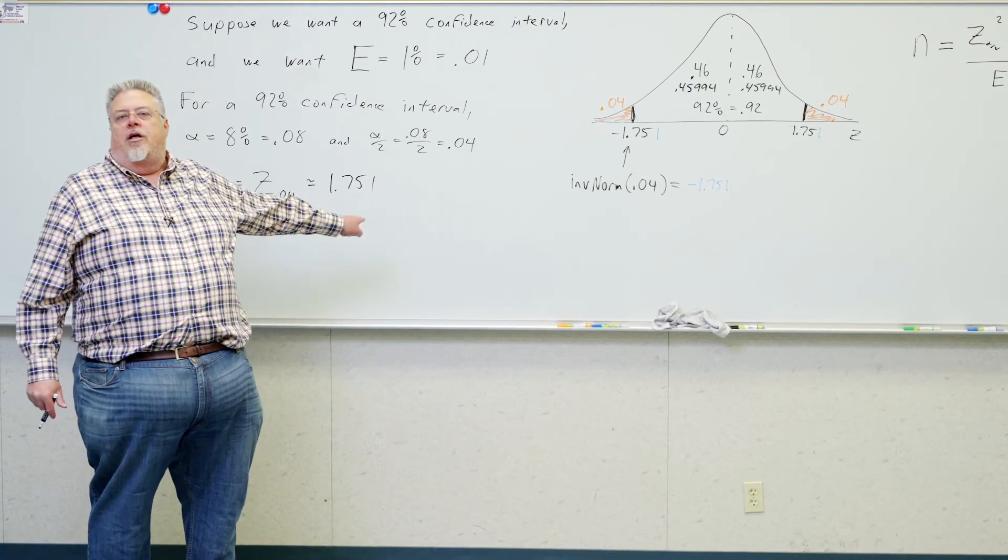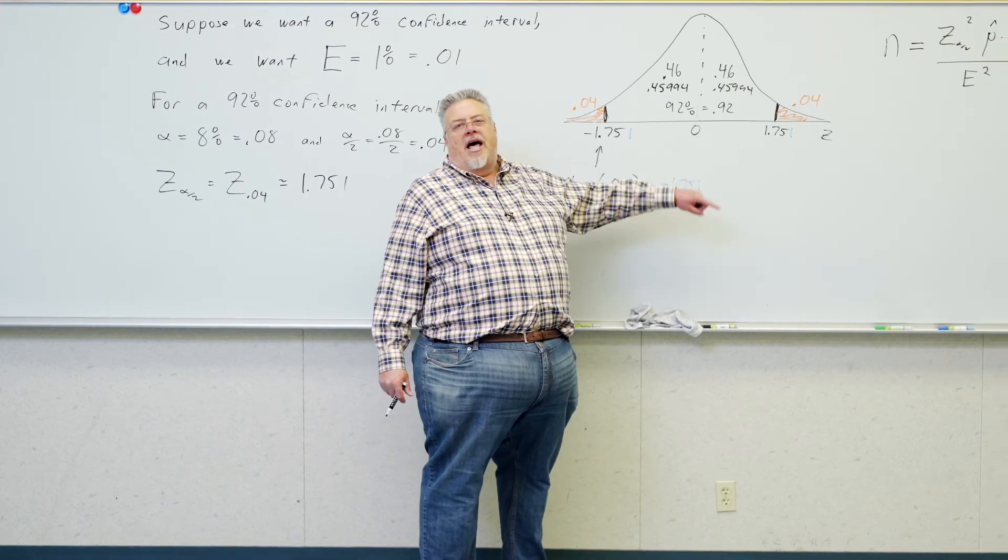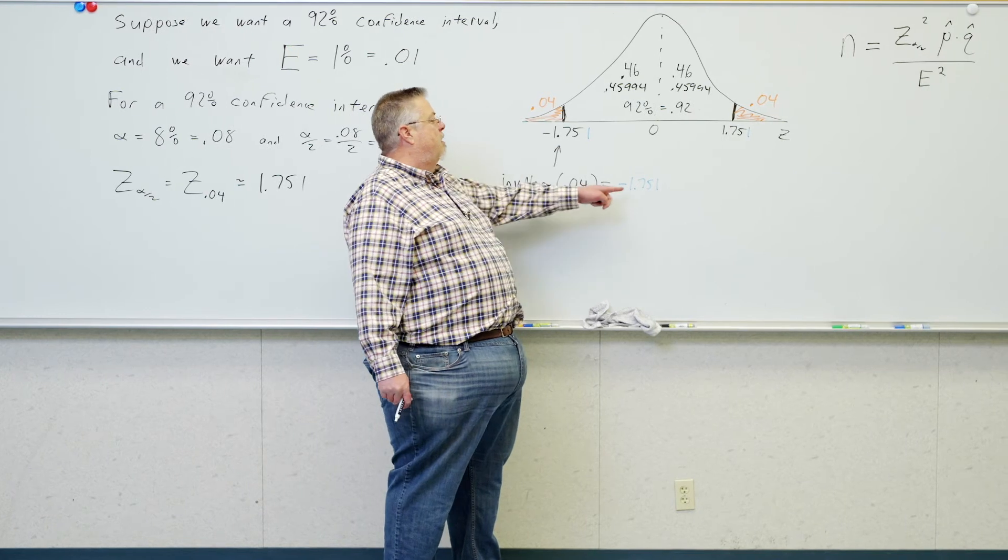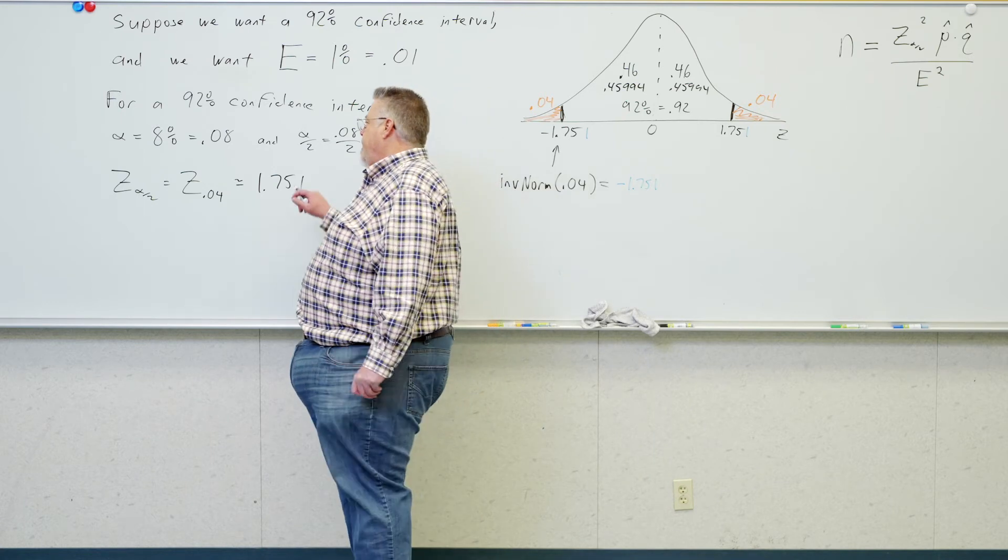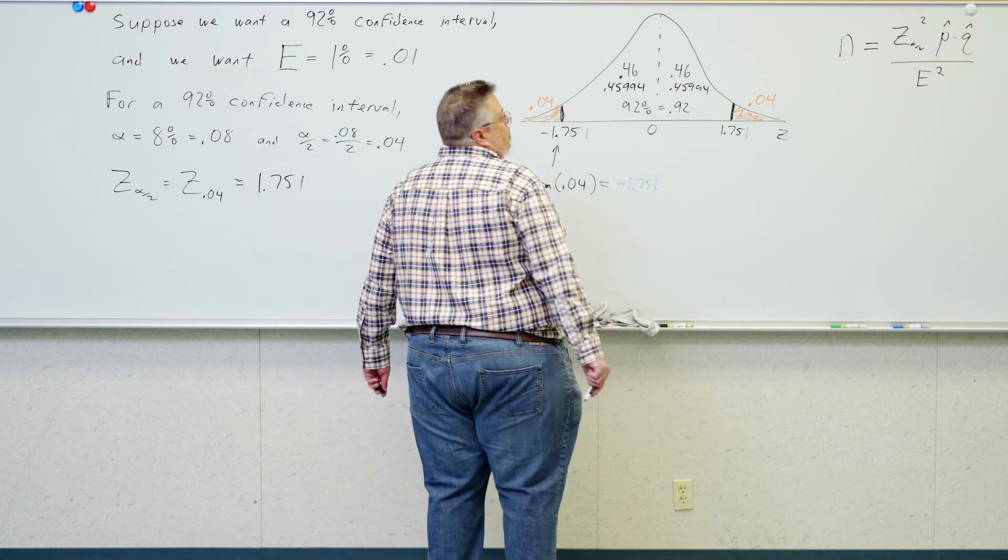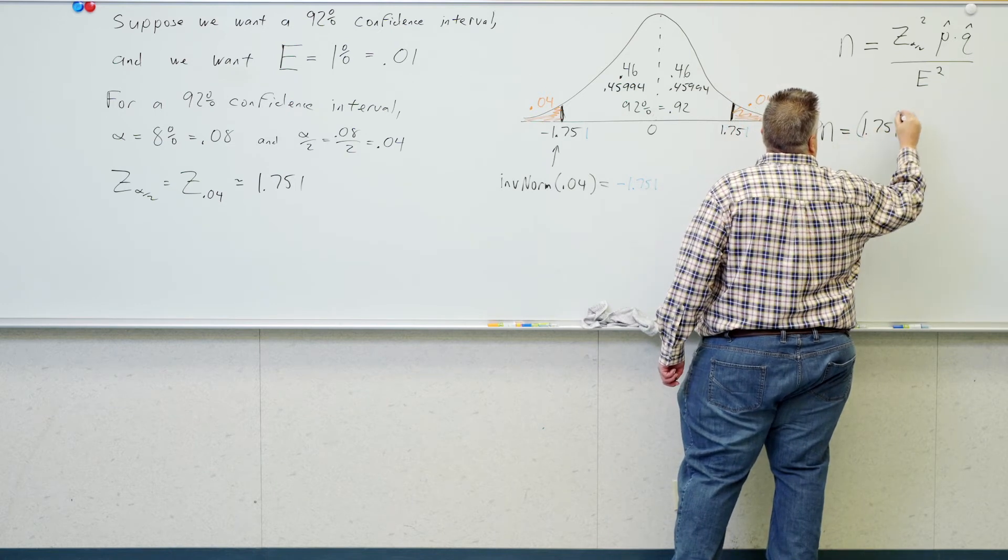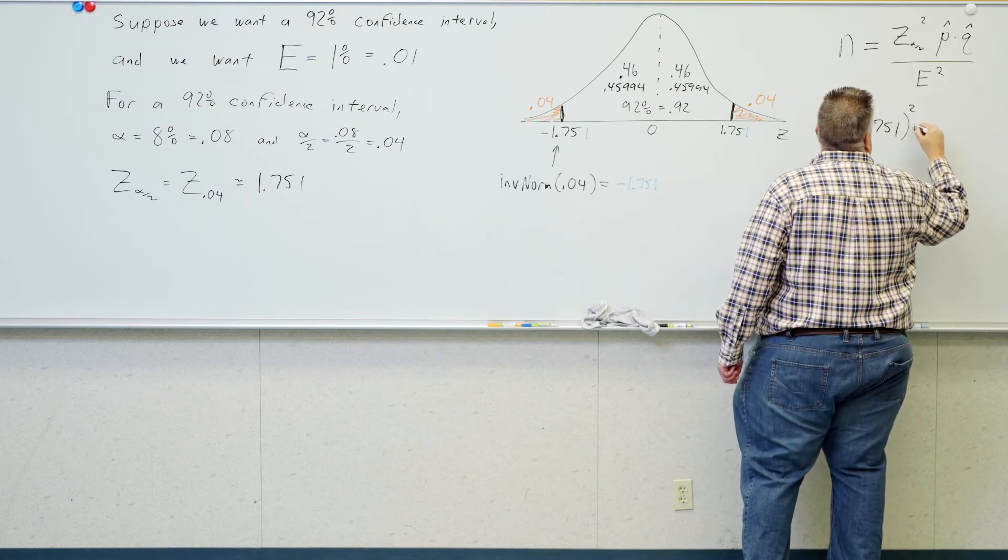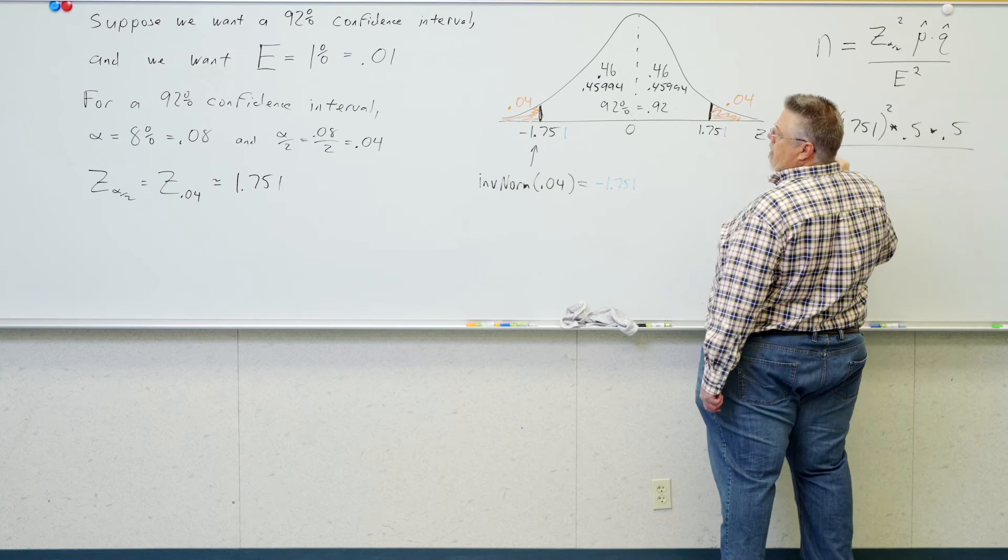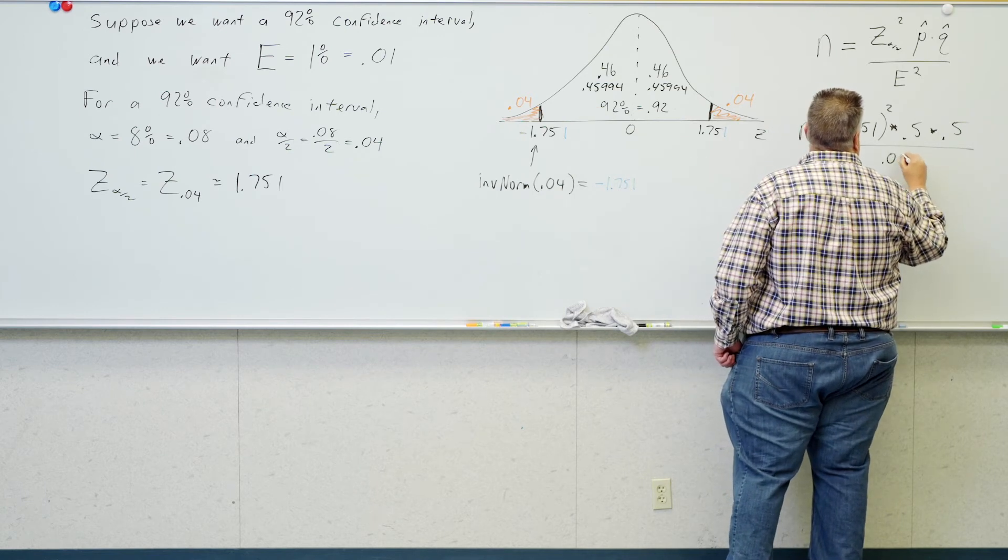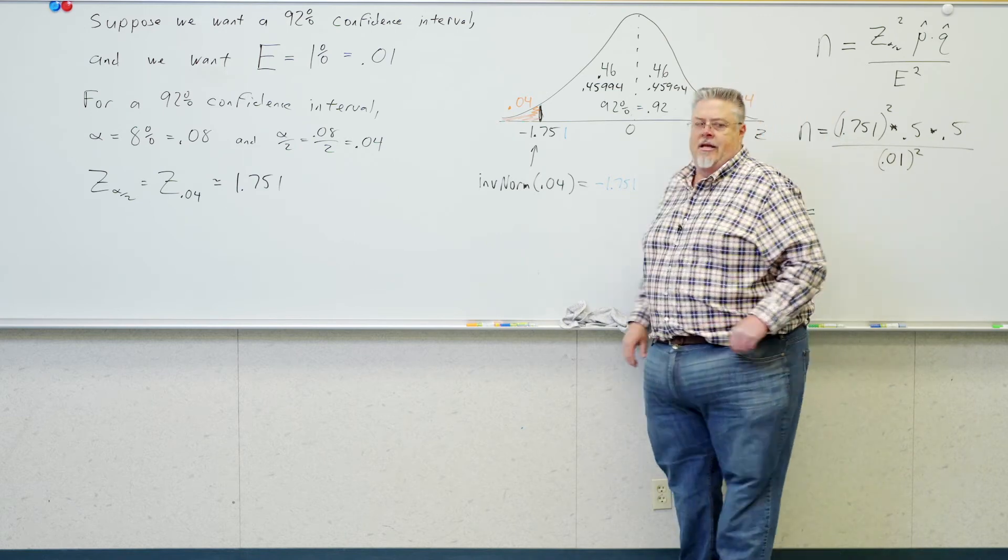So, either way I'm going to get a z score of about 1.75 or 1.751. Your t table does not have a column that's going to help you out here. So, we've had three ways to figure out these critical z scores. We've had the z table. We've had the bottom line of the t table. And we've had inverse normal on the calculator. Only one of those works. That's probably the hardest part of this whole thing is finding that number right there.